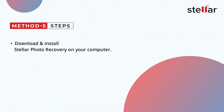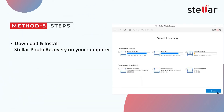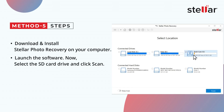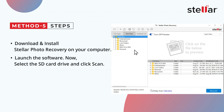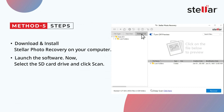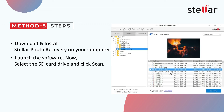Here's how you can get your photos back from SD card. Download and install Stellar Photo Recovery on your computer. Then connect your camera SD card to the computer. Launch the software and select the SD card drive and click Scan. The software will automatically detect your SD card drive. Wait until the scan finishes and displays the list of recoverable camera pictures.